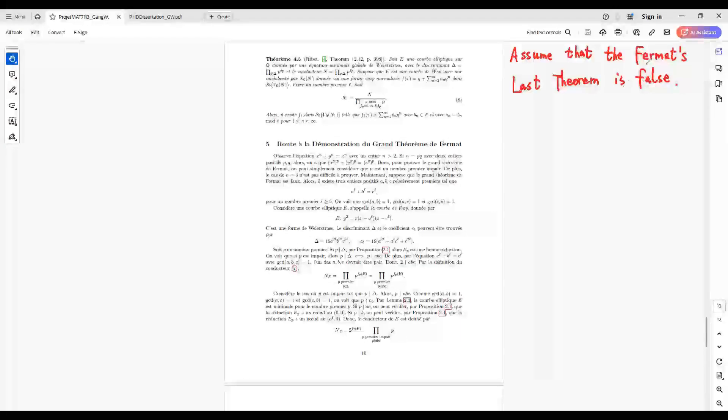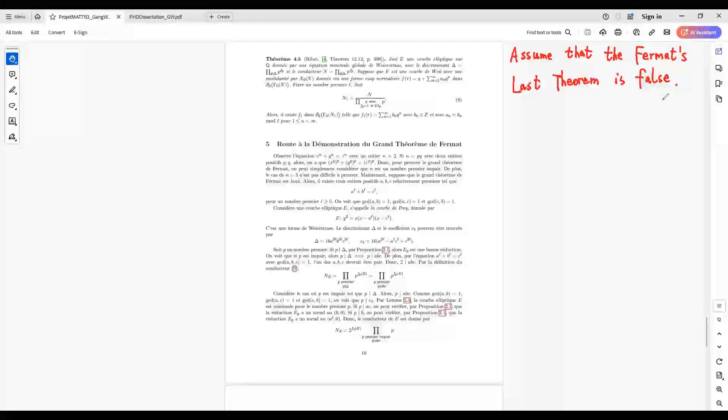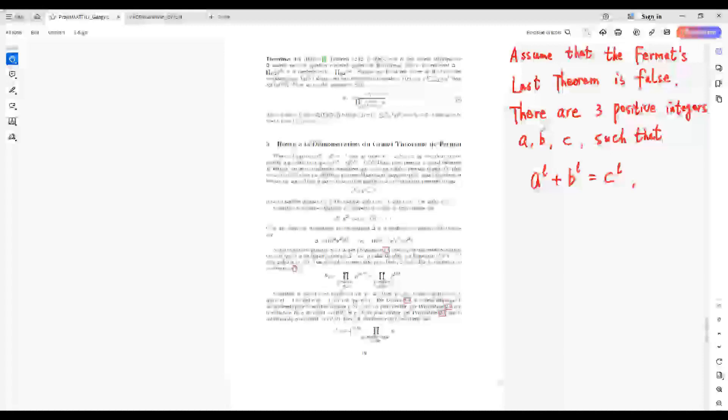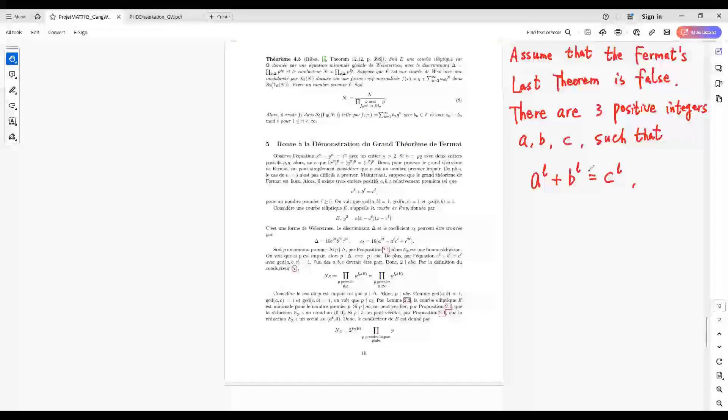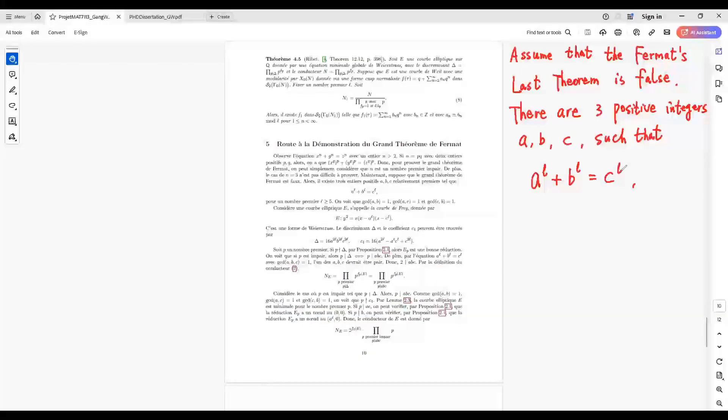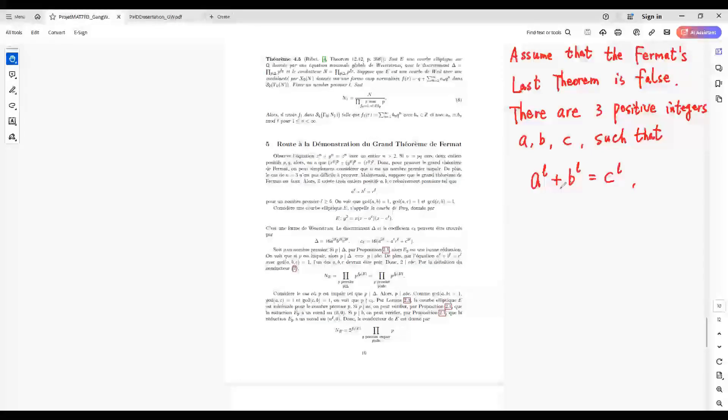Assume that Fermat's Last Theorem is false. This means there are three positive integers A, B, C such that A^L plus B^L equals C^L for a positive integer L.